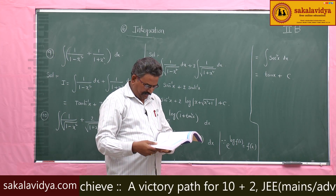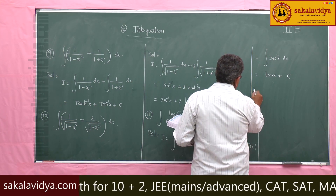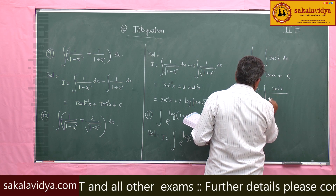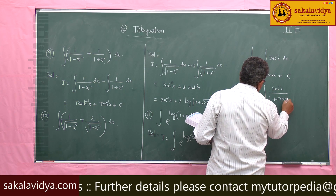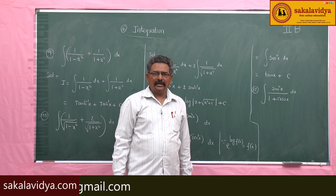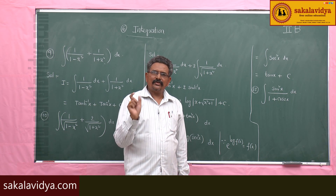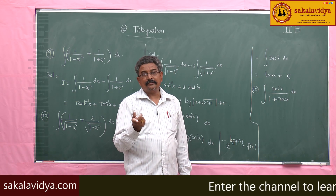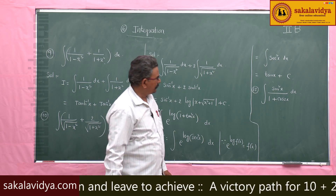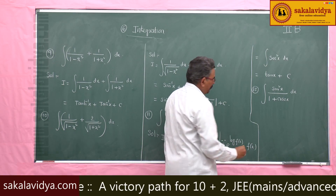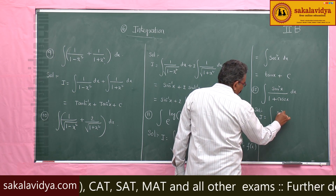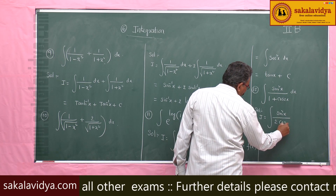Next, twelfth problem: evaluate integral of sin square x by 1 plus cos 2x dx. In trigonometry, from multiple and submultiple angle formulae, 1 minus cos 2x equals 2 sin square x, and 1 plus cos 2x equals 2 cos square x. So we replace 1 plus cos 2x with 2 cos square x. The solution: I is equal to integral of sin square x by 2 cos square x dx.